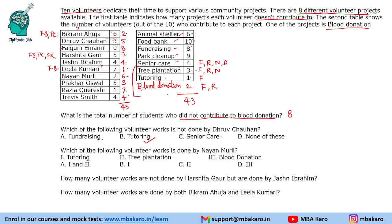Which of the following volunteer works is done by Nayan Murli? Nayan Murli will do all projects except tutoring and blood donation. So tree plantation is done by Nayan Murli.